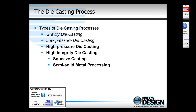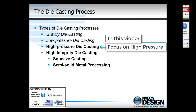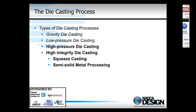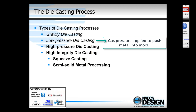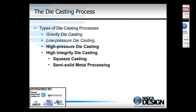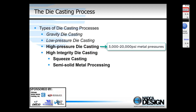Here, die casting is short for high pressure die casting, or sometimes high integrity die casting processes. These are different from gravity poured processes and from low pressure processes. In North America, die casting is injected at very high speed into a reusable steel die, and then very high pressures — generally from about 3,000 PSI to as high as 20,000 PSI — are applied once the cavity is filled.